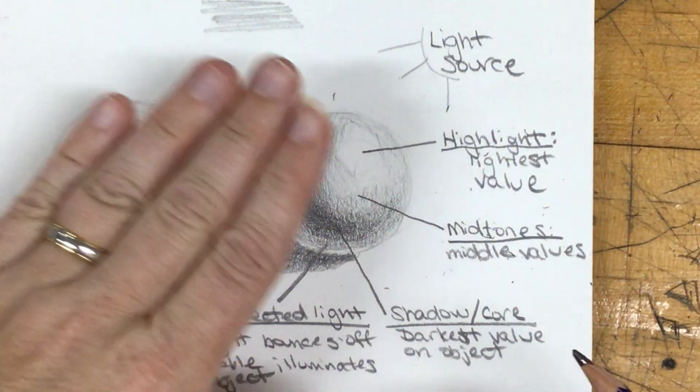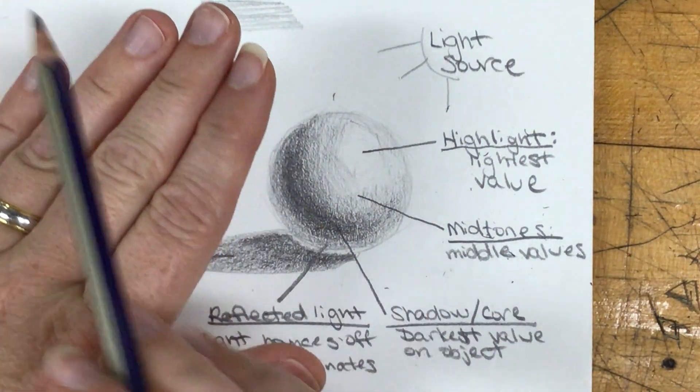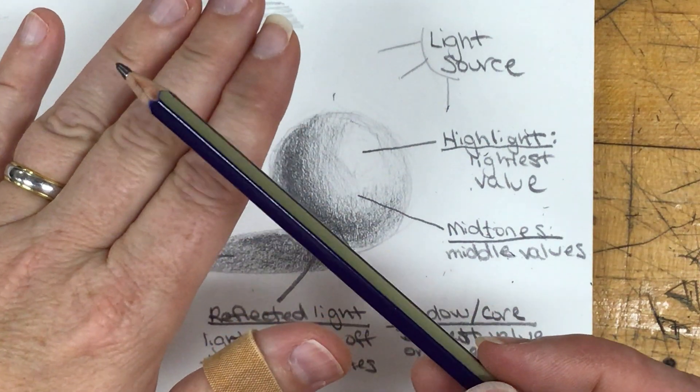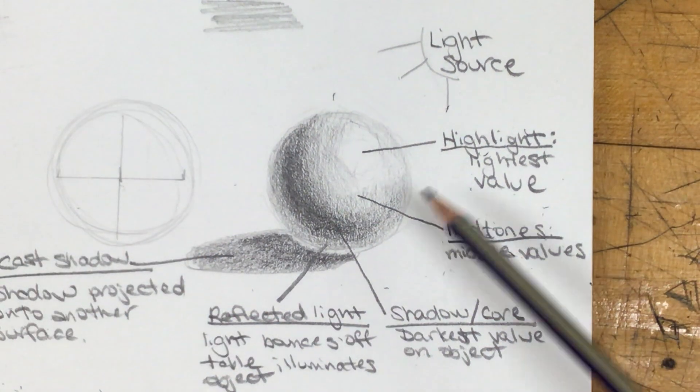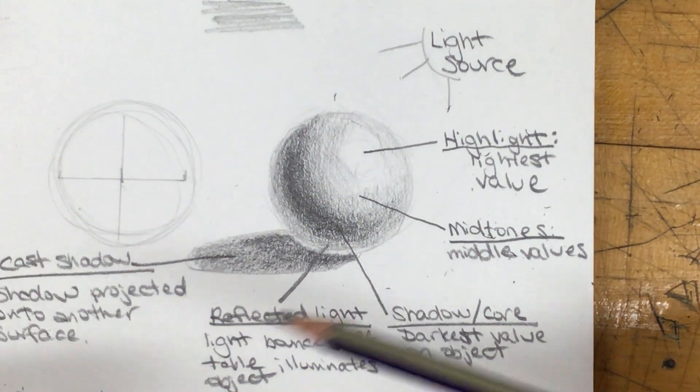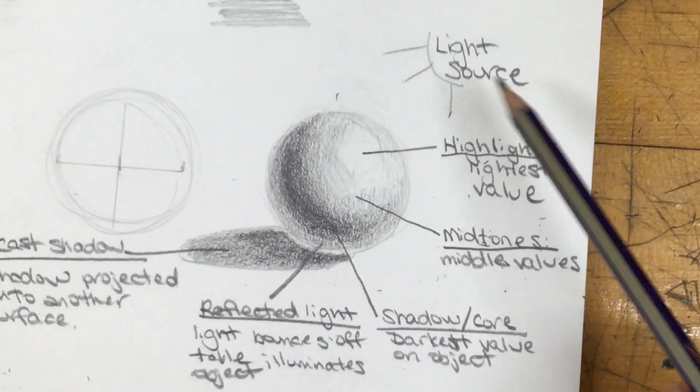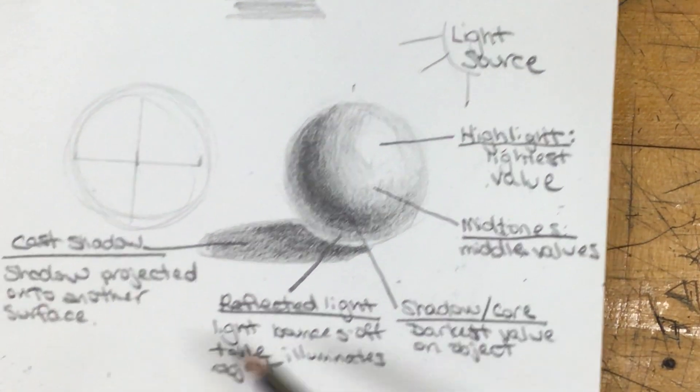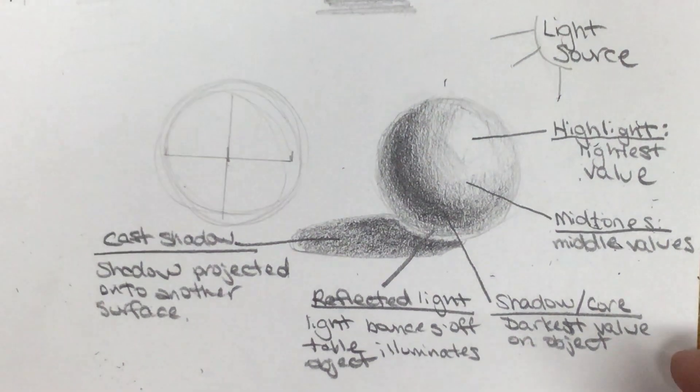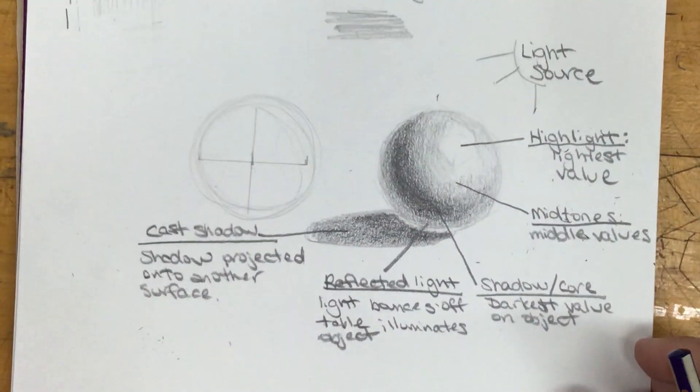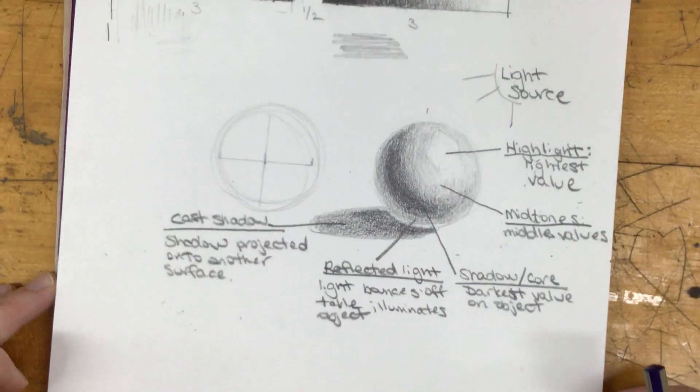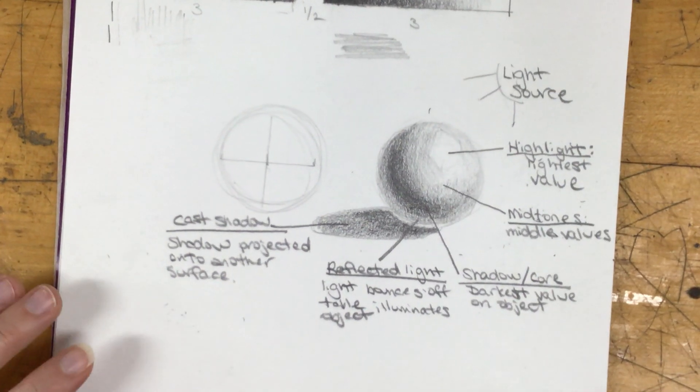So this could be on another object. Like a shadow could be projected on like a hand. This pencil is going to have its own shadow on my hand. It could be on a tabletop. It could be on a piece of fabric and so on. So make sure that you label all of these for yourself, because these are terms that we will use throughout the rest of the semester when we are making things look three-dimensional.